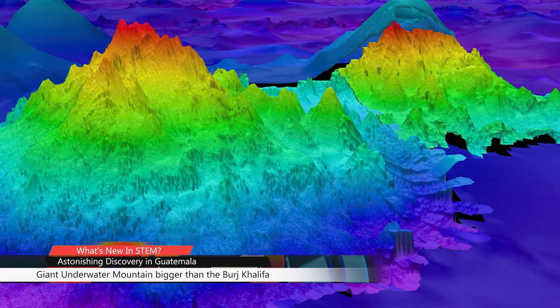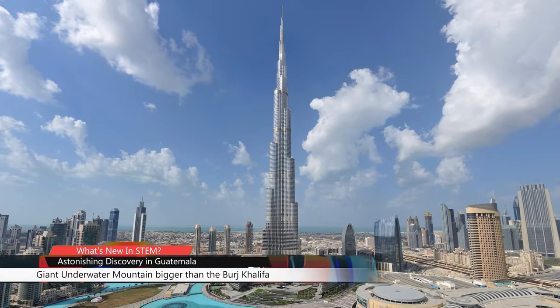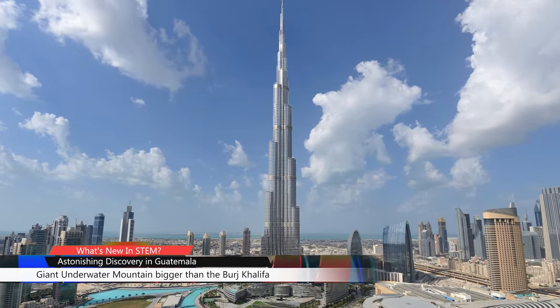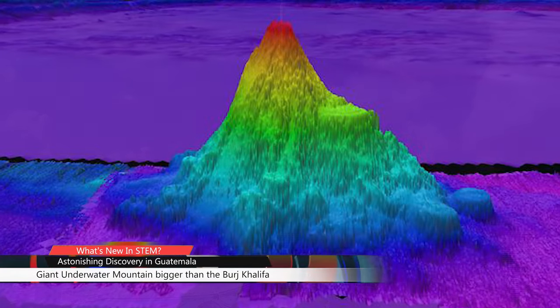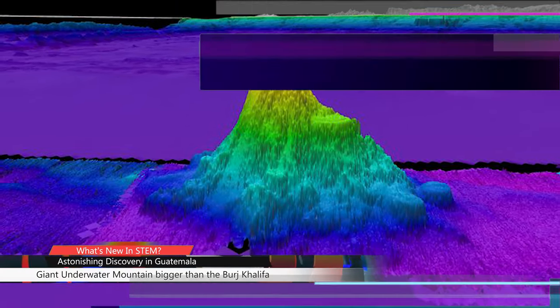In November of 2023, researchers mapping the seafloor near Guatemala made an astonishing discovery. They found a gigantic underwater mountain or seamount that is twice as tall as the Burj Khalifa, the world's tallest building. This cone-shaped structure stands at 1600 meters and lies 2400 meters below the ocean surface. It's remnant of an ancient underwater volcano and covers approximately 14 square kilometers. Seamounts like this provide crucial rocky habitats for deep sea corals, sponges, and various invertebrates. Interestingly enough, experts estimate that there are at least 100,000 undiscovered seamounts in the world's ocean.